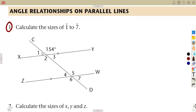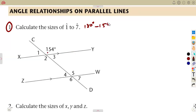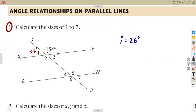The 154-degree angle is on a straight line, and angles on a straight line add up to 180 degrees. So these two angles add up to 180 degrees. Subtracting 154 from 180 gives us 26 degrees. So angle 1 is 26 degrees. The reason we use is: angles on a straight line.